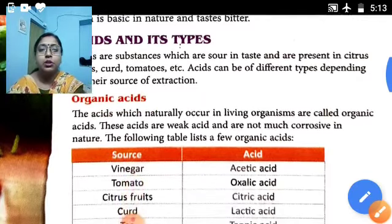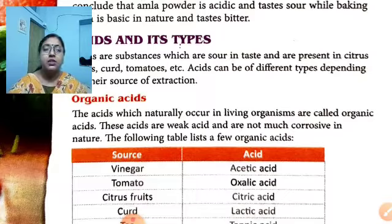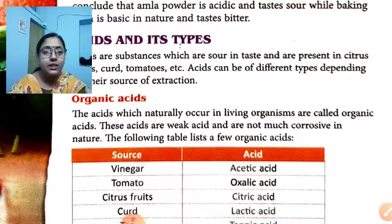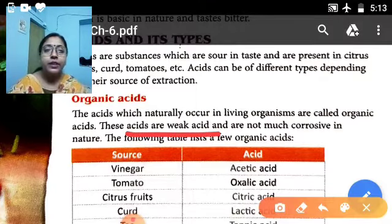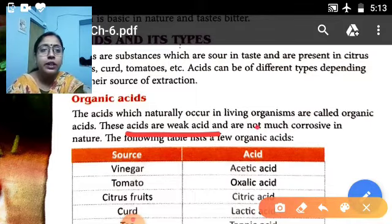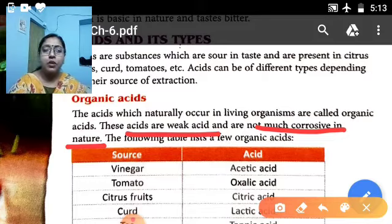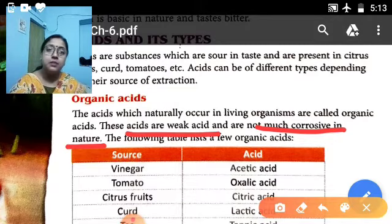The acids which naturally occur in living organisms like plants and animals are called organic acids. These acids are weak acids because they are not very harmful and can be used in foodstuffs. They are not much corrosive in nature — that means they do not damage our skin or other objects. The properties of organic acids are that they come from living organisms and are weak and not so corrosive.